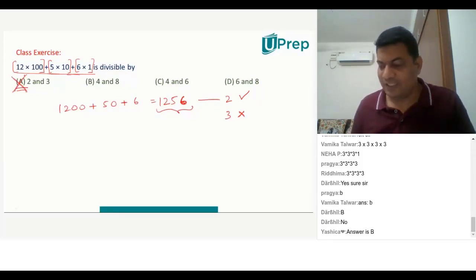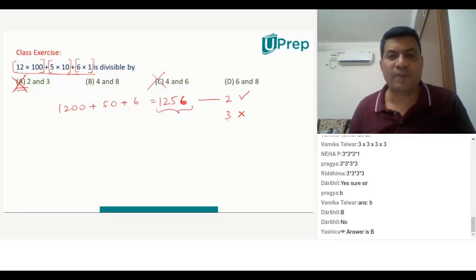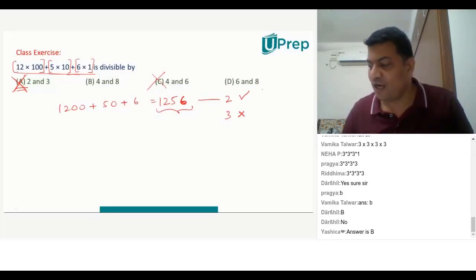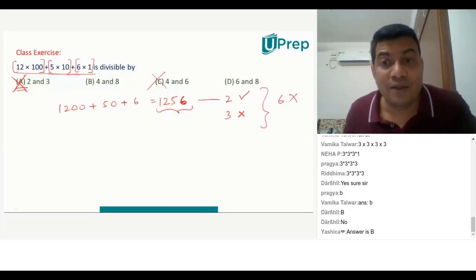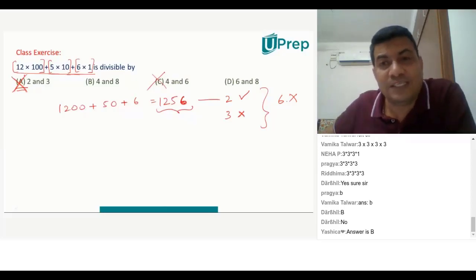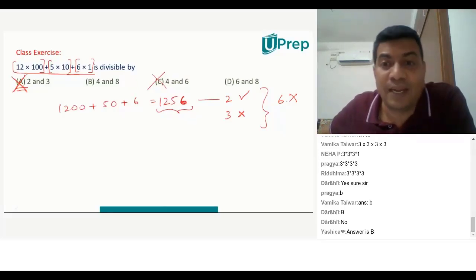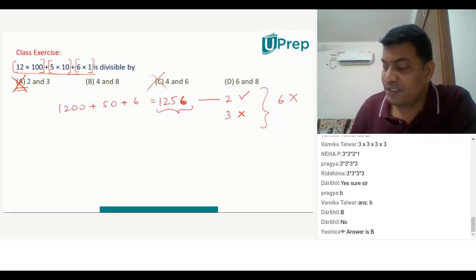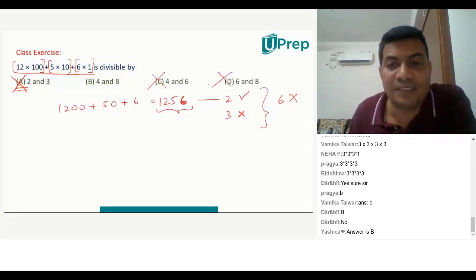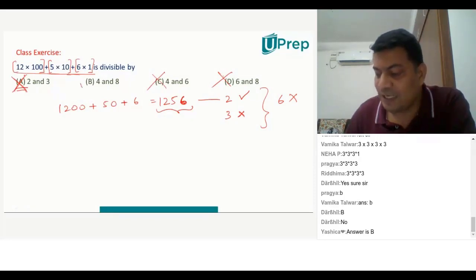I need not even check for B directly. I can also say that C cannot be my answer because it's not divisible by 2 and not divisible by 3 — it is definitely not divisible by 6, because for a number to be divisible by 6 it should be divisible by both 2 and 3. Therefore option C cannot be the answer and option D also cannot be the answer. Therefore, without checking anything further, I can say B is the answer.